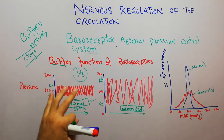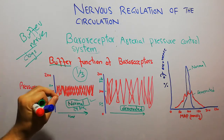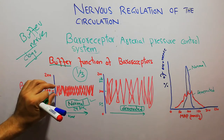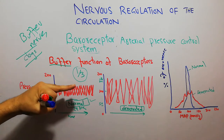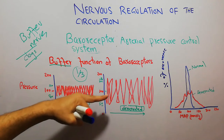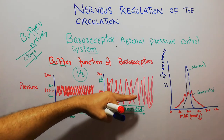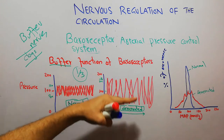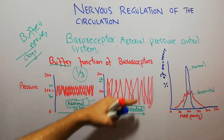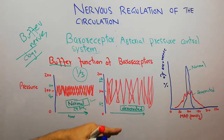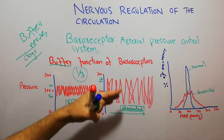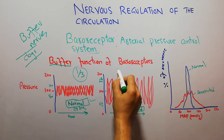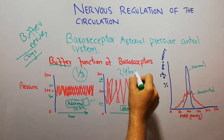In a normal mammal or a normal human being, the variation of the arterial pressure can be minimized by around one third if the baroreceptors are functional. This experiment proves that if the baroreceptors are normally functioning, arterial pressure is maintained strictly. When the baroreceptors are removed, arterial pressure starts showing variations quite frequently throughout the day. This is a record of a 24-hour duration.